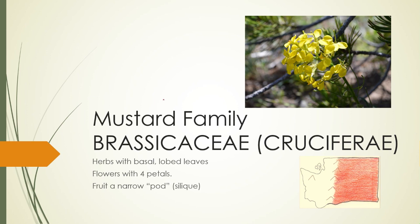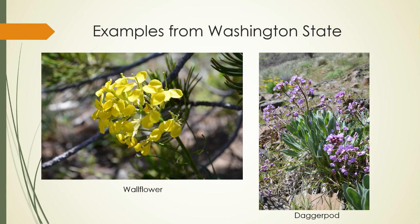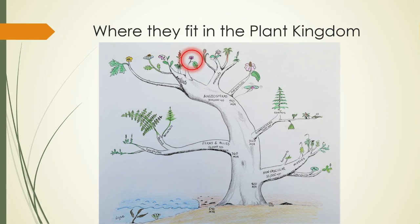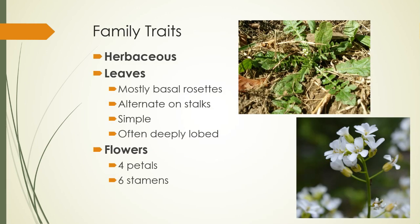Now we call it Brassicaceae, or just the mustard family. Let's meet some members from Washington State — most have white, purple, or yellow flowers. If a plant has four petals, you're pretty sure it's in the mustard family. They sit in the eudicot branch of the plant family tree along with roses, cucumbers, and even oak trees. To identify something in the mustard family, look first for herbaceous characteristics like a basal rosette of leaves, usually with lobed margins.